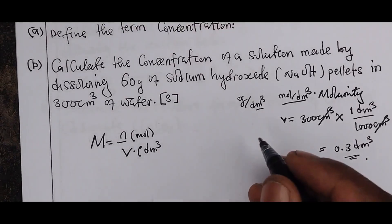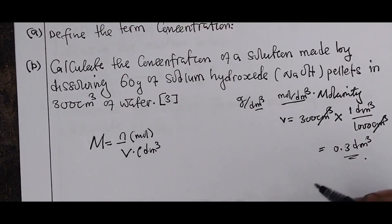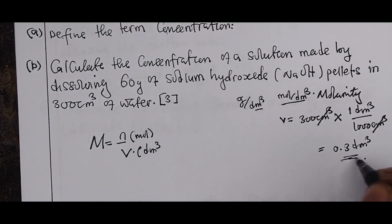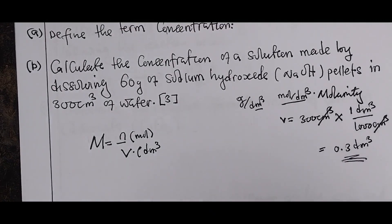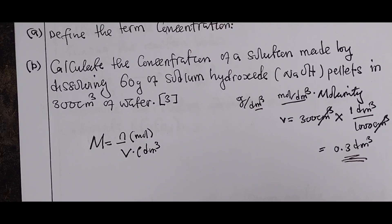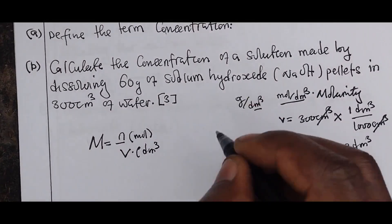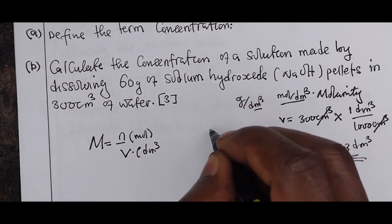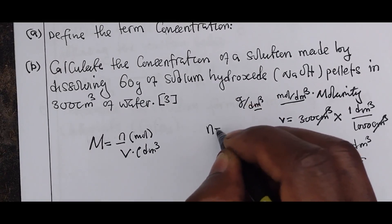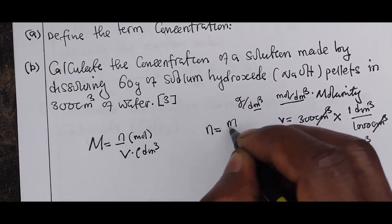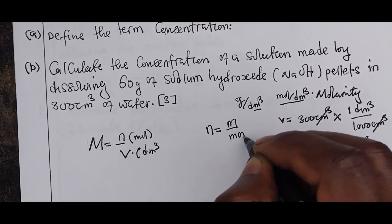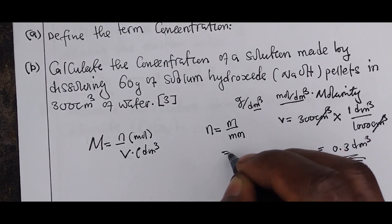To find concentration we need the number of moles. Since we are given the mass of sodium hydroxide, we use the formula: number of moles equals given mass divided by molar mass.